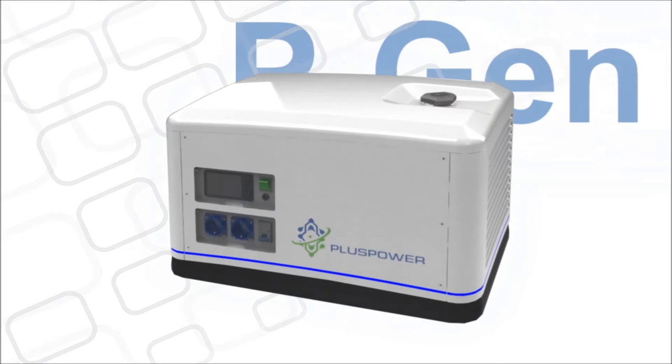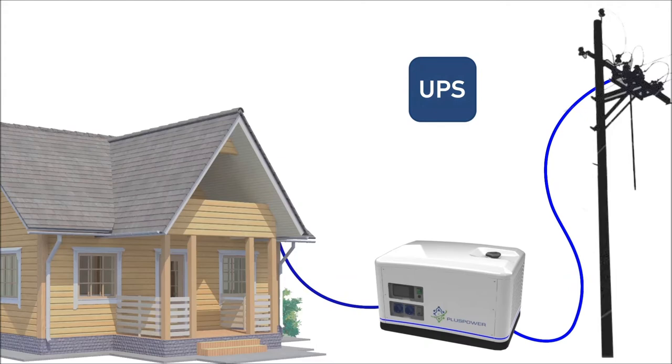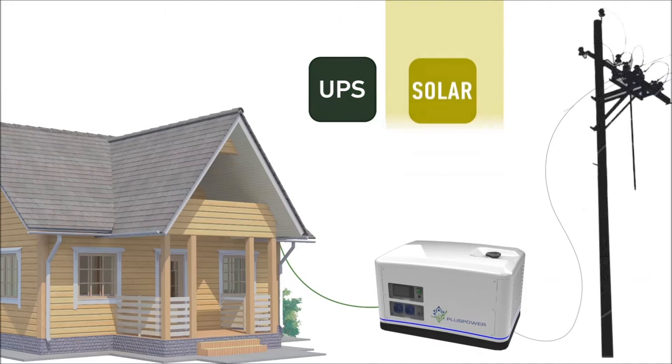For expanded functionality, there will be additional features such as a UPS module that converts your generator into an online UPS. When there is a shutdown, PGen will automatically attend to your needs. You wouldn't even notice there was a power cut, and thanks to double power conversion, your lights won't even blink.